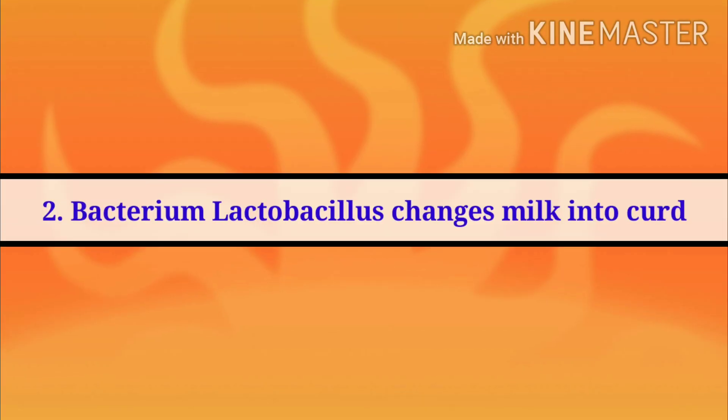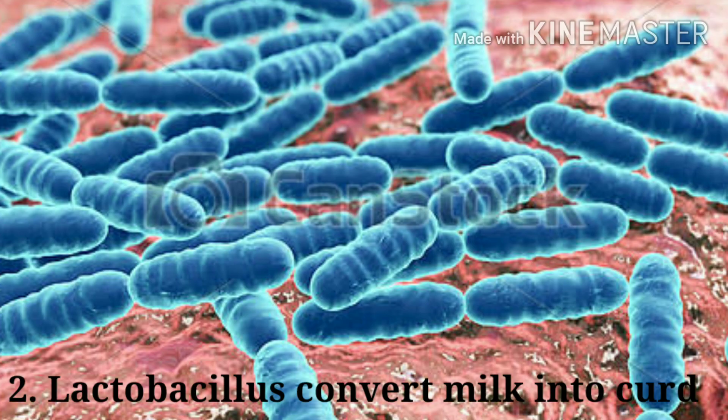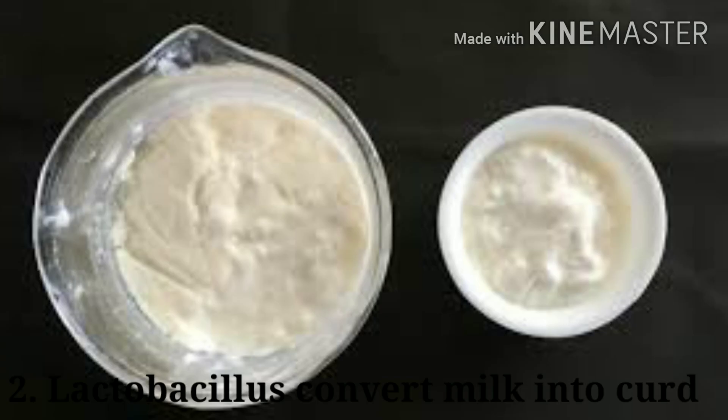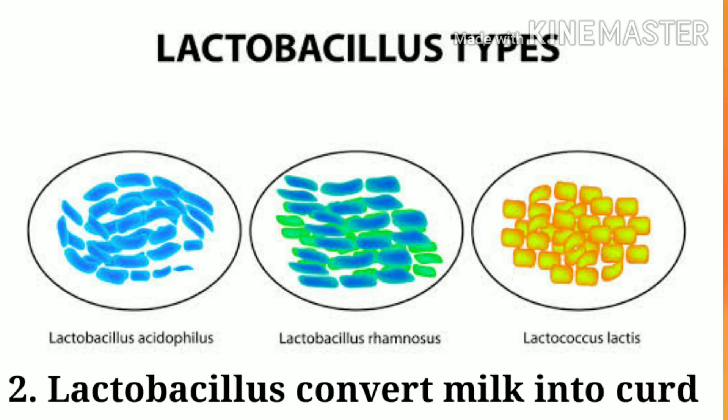The rod-shaped bacteria Lactobacillus is used for the production of curd from milk. The bacteria Lactobacillus converts the milk sugar lactose into lactic acid.